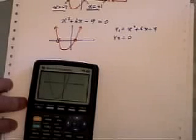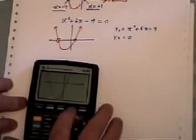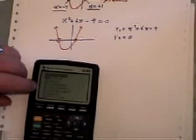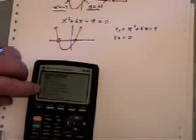Here's how you solve it from there. What you're going to do is press 2nd and Calc, and choose the 5th option, which says Intersect.